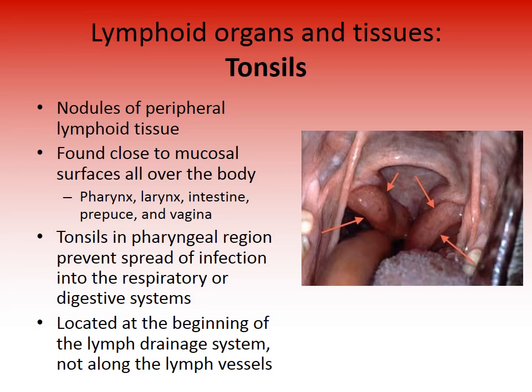Tonsils are nodules of peripheral lymphoid tissue found close to mucosal surfaces all over the body — in the pharynx, larynx, intestines, prepuce, and vagina. While we commonly think of tonsils as only the ones in the throat, there are actually several found throughout the body. Pharyngeal tonsils prevent the spread of infection into the respiratory or digestive system and are located at the beginning of the lymph drainage system, not along the lymph vessels.